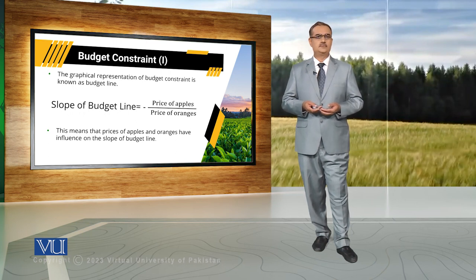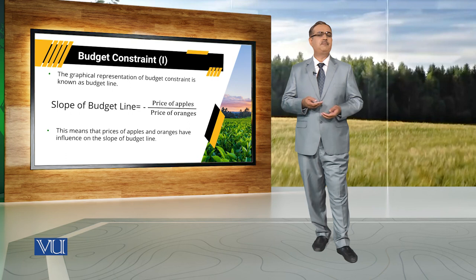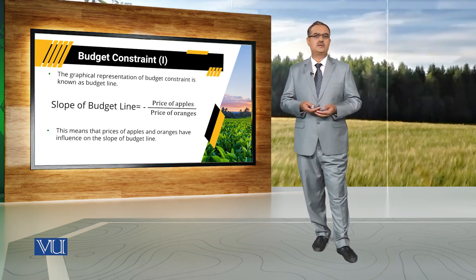Income has no role in the determination of the slope of the budget line. If there is any change in the prices of the commodities, there is a change in the slope. In the determination of the budget constraint itself, both prices of the commodities and the income of the consumer play a role — they are the key determinants. But for the slope of the budget line, only prices matter.